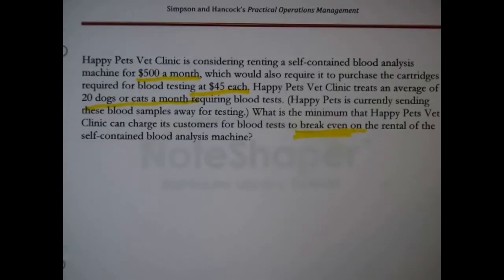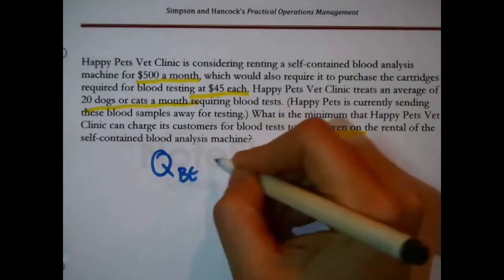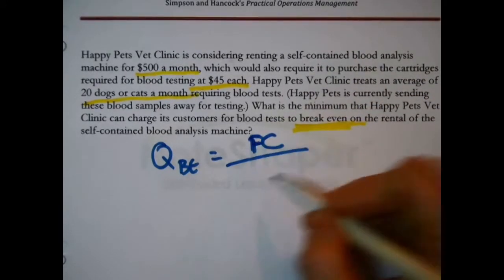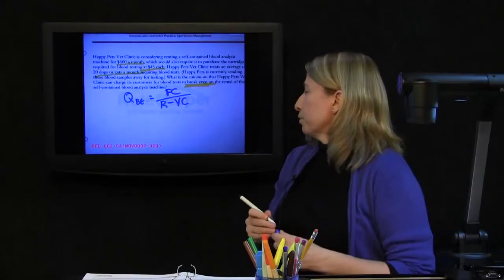Well, break even, at least that I know from memory. The quantity required to break even is the fixed cost, just like I quoted before, fixed cost, that's an F, divided by the revenue per unit minus the variable cost.